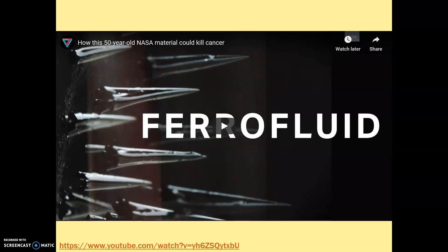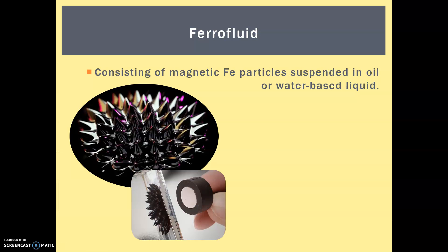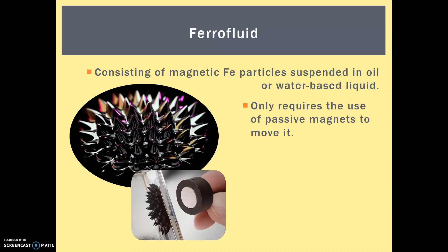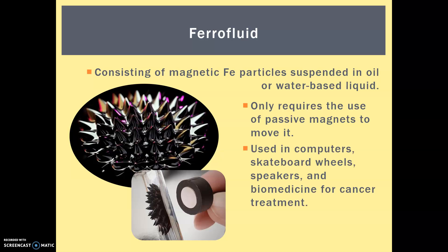And now a video on our last modern material, which is one of my favourites — ferrofluid. Ferrofluid consists of magnetic iron particles suspended in either an oil or a water-based liquid. The beauty of ferrofluid is that it only requires the use of passive magnets to move it around, so you don't need to use energy or fuel. It has so much potential and it's currently used in computers, skateboard wheels, and speakers, and as the video discussed, it has the potential for biomedical applications in cancer treatment.